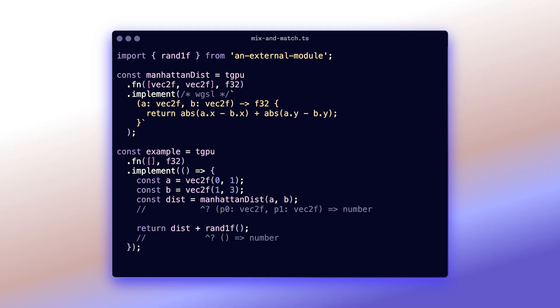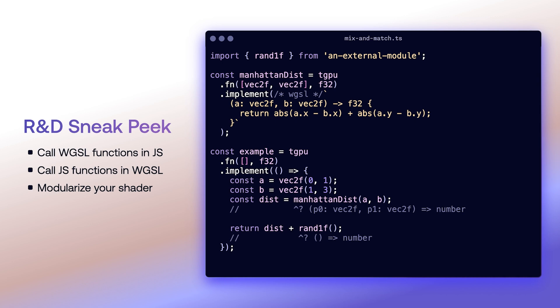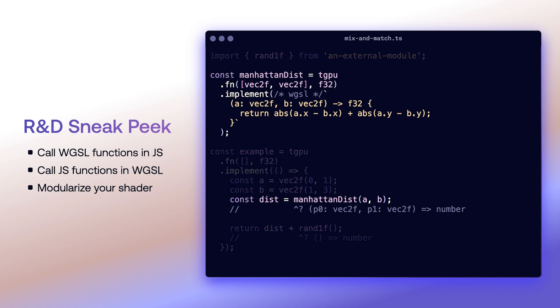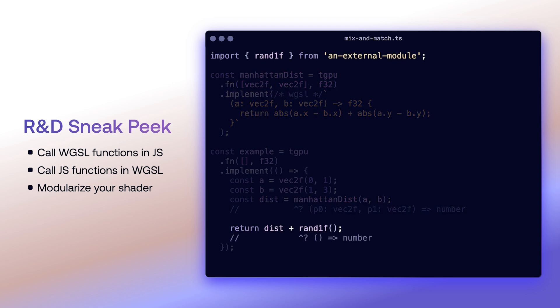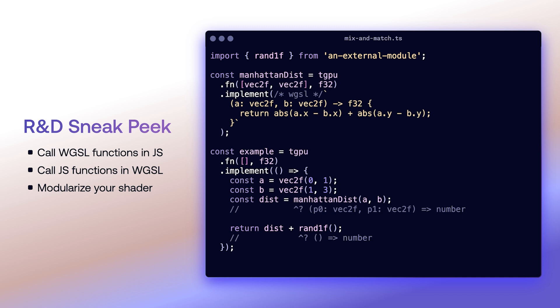We want to ensure that this new approach integrates well into existing WebGPU codebases, so you can mix and match WGSL and TGSL. New projects can fully adopt the new approach from the start, taking full advantage of TypeScript type safety on the GPU. Our plan is to build reusable modules for common use cases, like neural network inference, graphics programming, and general computing. This new approach lets us do more than is possible with regular WGSL, like higher-order functions. We can also use the typed buffers we introduced in version 0.1 directly in code, and we will create the bindings for you.